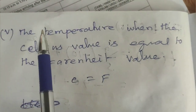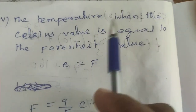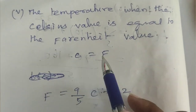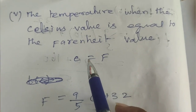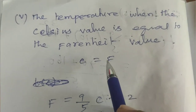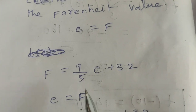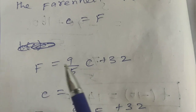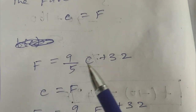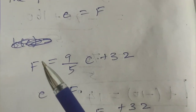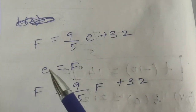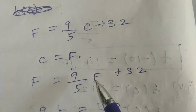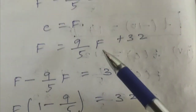The fifth sub-question: the temperature when the Celsius value equals the Fahrenheit value. That is, C equals F. We substitute C equals F into the equation F equals 9 by 5 times C plus 32, replacing C with F: F equals 9 by 5 times F plus 32.